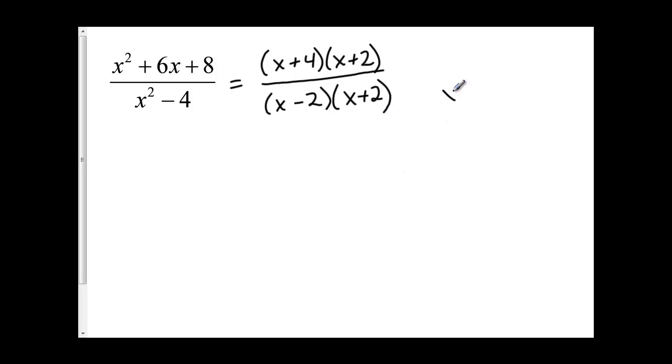Once I factored it, at this stage, I am able to indicate my non-permissible values. For my first factor, x minus 2, my non-permissible value is 2. For my second factor, x plus 2, my non-permissible value is negative 2.